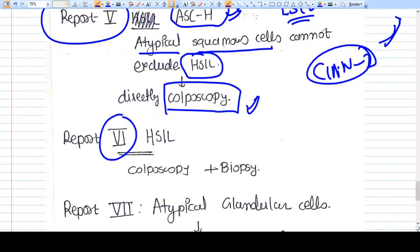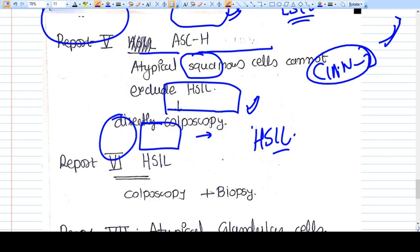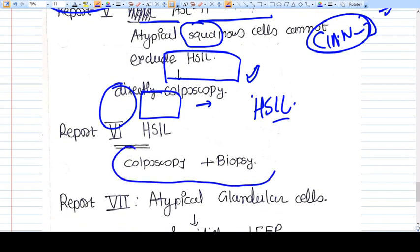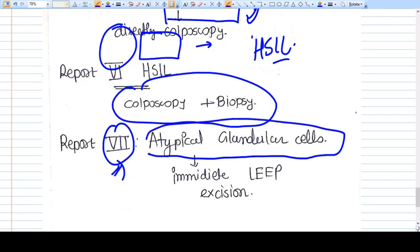Report number six is HSIL. We now know that we have confirmed HSIL—high-grade squamous cell epithelium. We have no option but to go for colposcopy and biopsy.